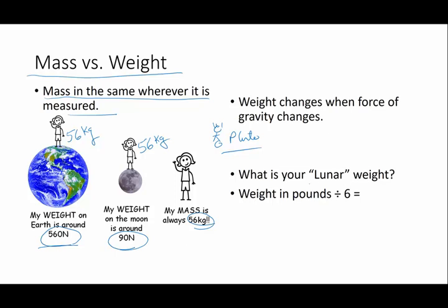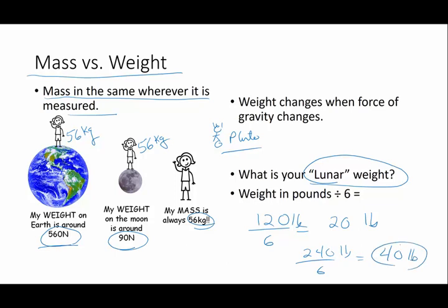If you want to calculate your lunar weight, if anybody is ever so brash as to ask you how much you weigh, I usually just tell them how much I weigh on the Moon. So just take whatever you weigh, divide by 6, and that is going to be your lunar weight. So if you weigh 120 pounds on the Earth, you weigh 20 pounds on the Moon. If you weigh 240 pounds on the Earth, you would weigh a whole whopping 40 pounds on the Moon, because weight changes when gravity changes.